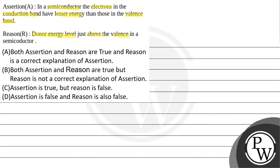Option A: Both assertion and reason are true and reason is a correct explanation of assertion. Option B: Both assertion and reason are true but reason is not a correct explanation of assertion.